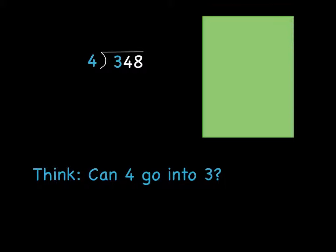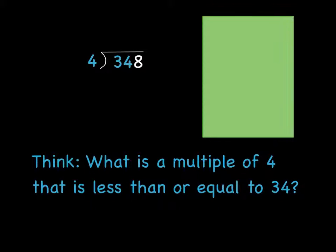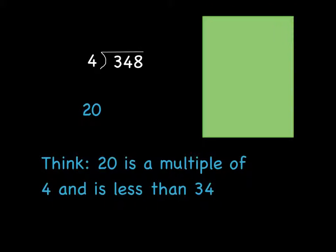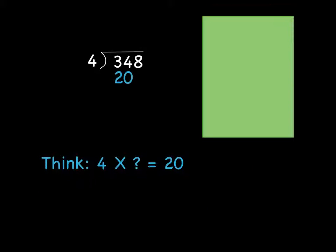So first of all, we're going to think, can 4 go into 3? No, it cannot. So now we have to think, what is a multiple of 4 that is less than or equal to 34? Well, 20 is a multiple of 4, and it's less than 34. So let's go ahead and write 20 up here.